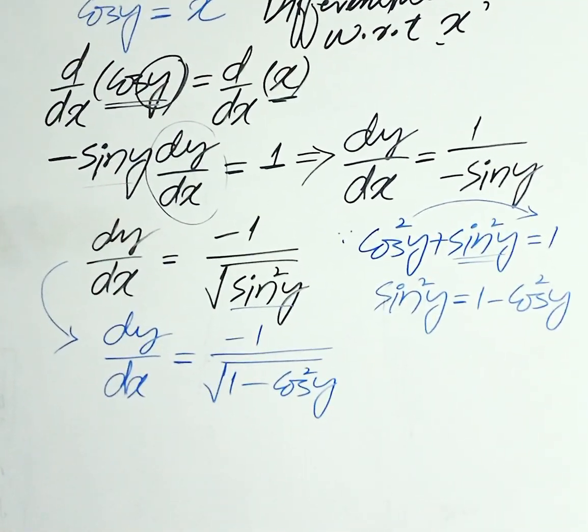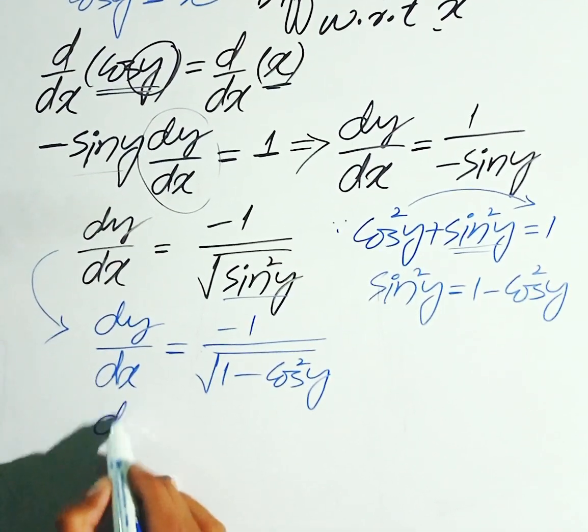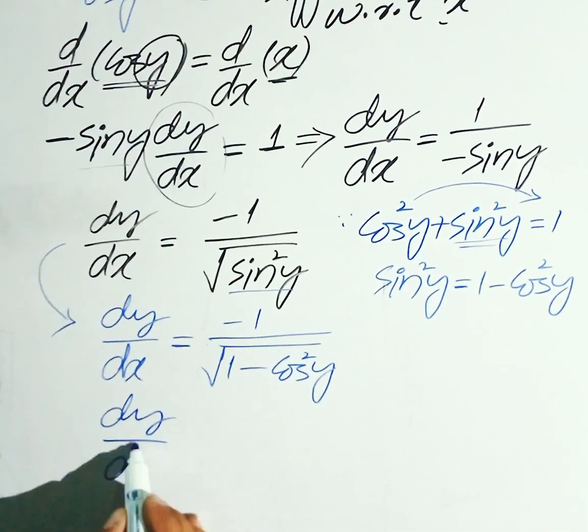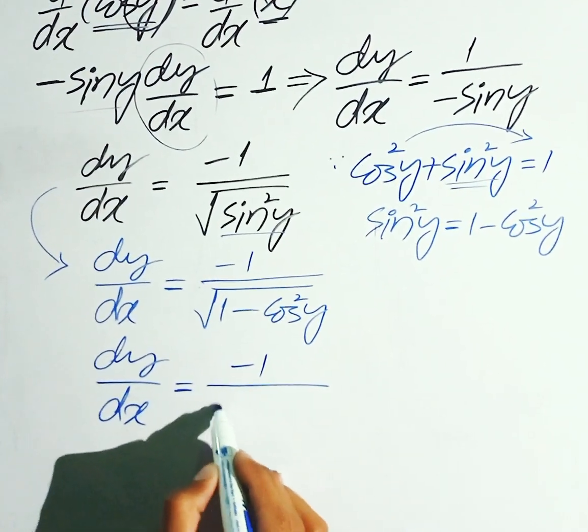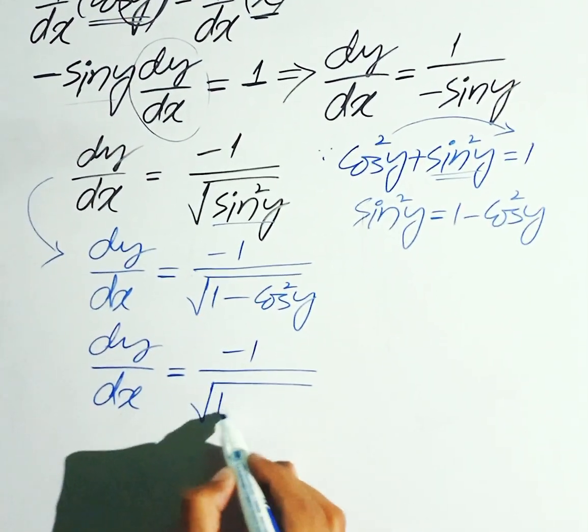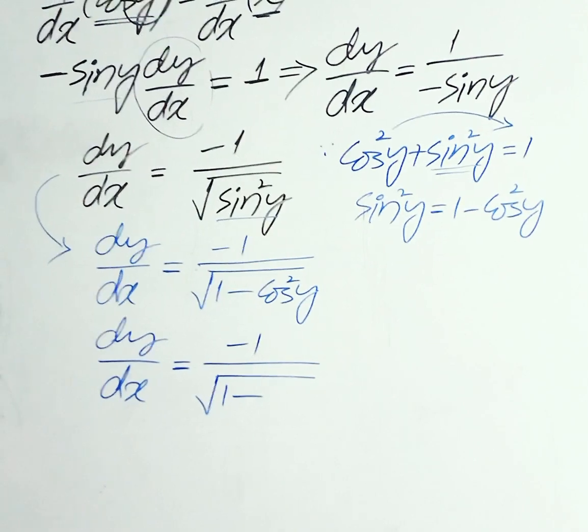Yahan se ban jayega aap ke paas dy over dx is equal to minus 1 divided by square root of 1 minus sin square y ki jayega 1 minus cos square y á jayega. Is it clear? Now, dy over dx is equal to minus 1 divided by square root of 1 minus cos square y.